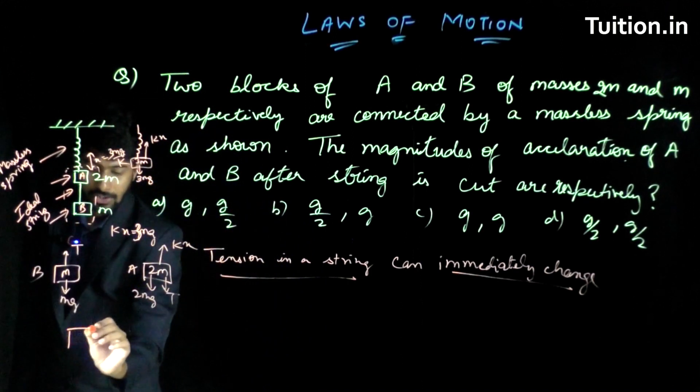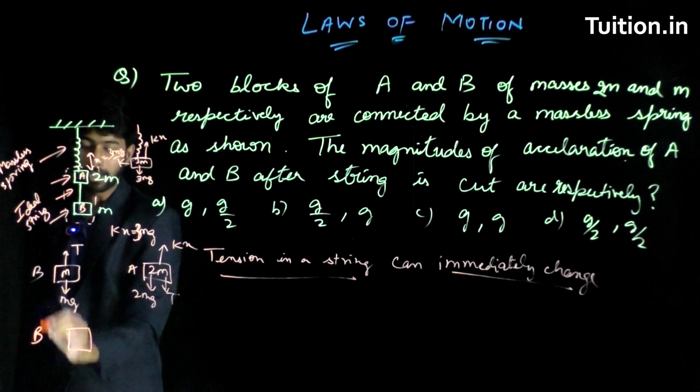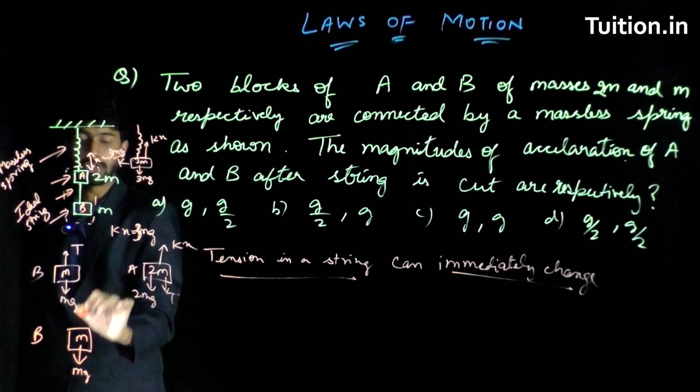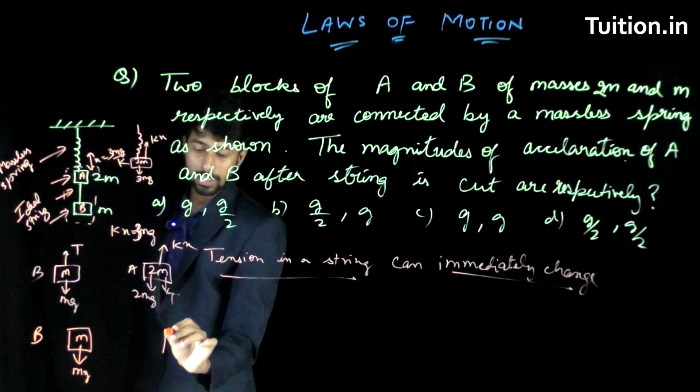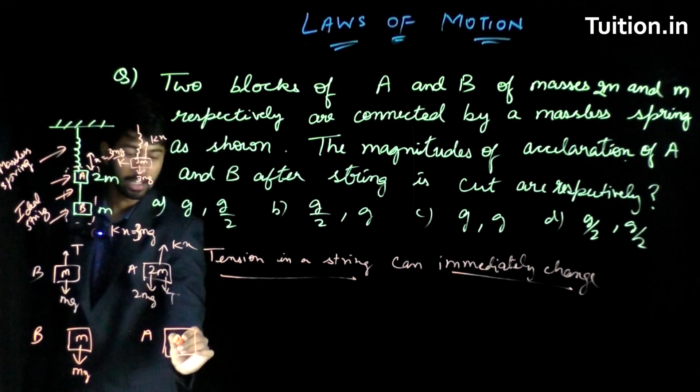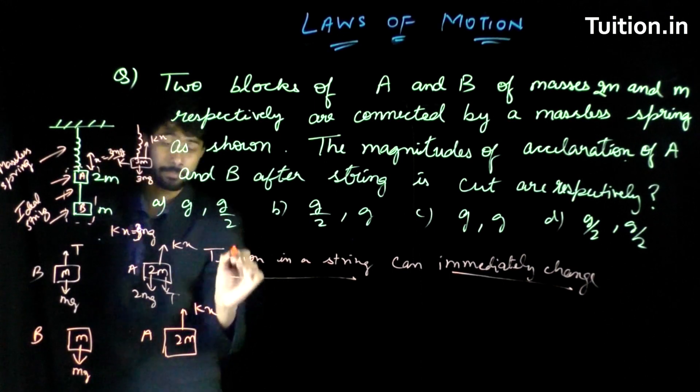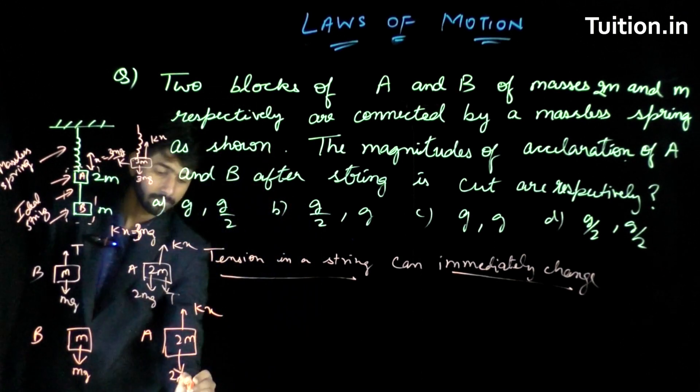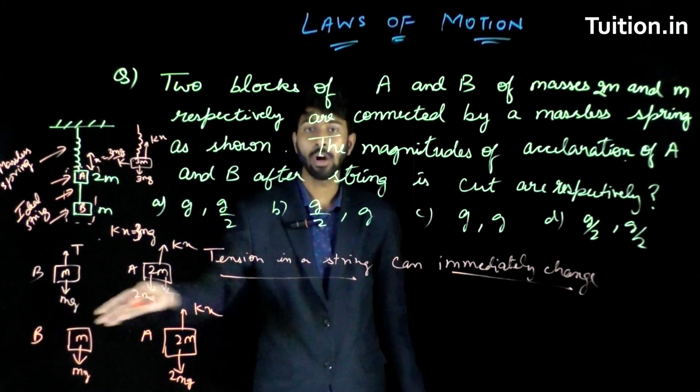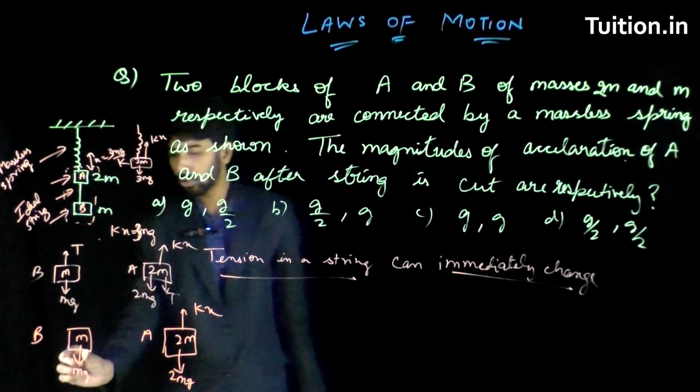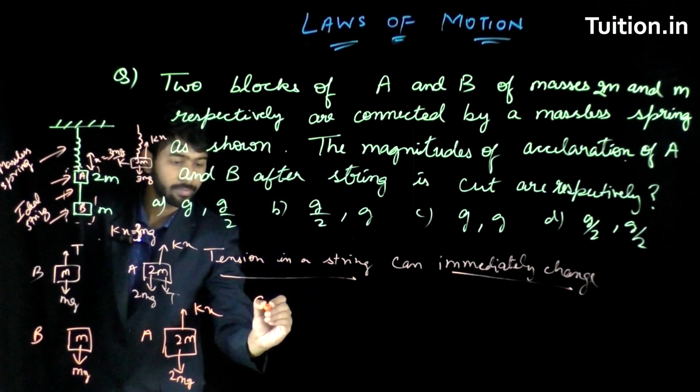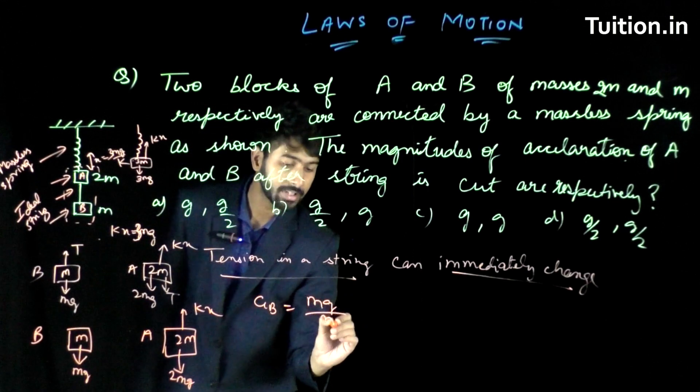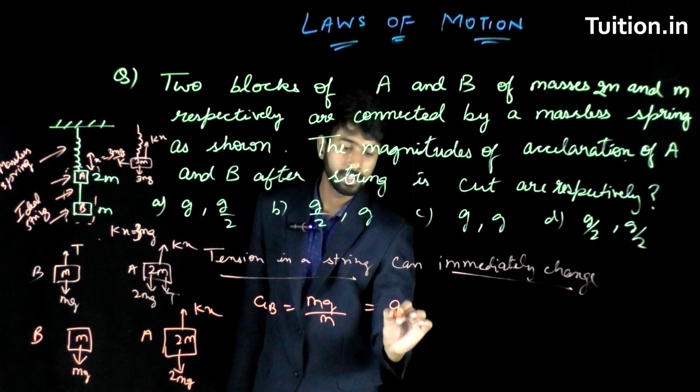Because it can immediately change, I can say now after being cut, my free body diagram will look like mg for B and tension would have reduced to zero. Here also the tension would have reduced to zero. For A with mass 2m, the kx will still be acting. kx will still be acting and 2mg will still be acting and tension would have reduced to zero. This is the scenario after the string is cut. Now I know the force on the body, I need the acceleration. So acceleration of B is force on B which is mg divided by mass of B which is m. So the acceleration of B is g.